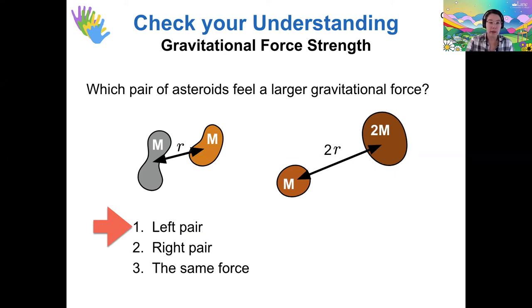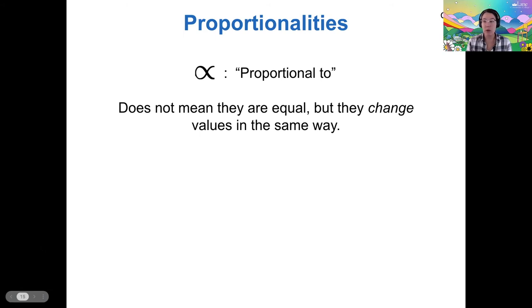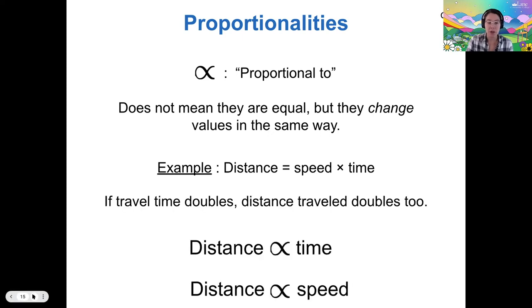And to explain why, I want to first talk about the idea of proportionality, which we kind of mentioned last week, but we didn't dig into too deeply. So proportional to is this kind of fish looking symbol, and proportionality just means that even though one quantity might not be equal to another quantity, they change in the same way. So that means if I have some equation like distance equals speed times time, instead of having a direct equal in this equation, I could instead say, well, distance is proportional to time. And the reason I know distance is proportional to time is let's say I'm in a car driving down the highway, and I drive at the same speed for twice the amount of time. If my travel time doubles, my distance traveled doubles too.